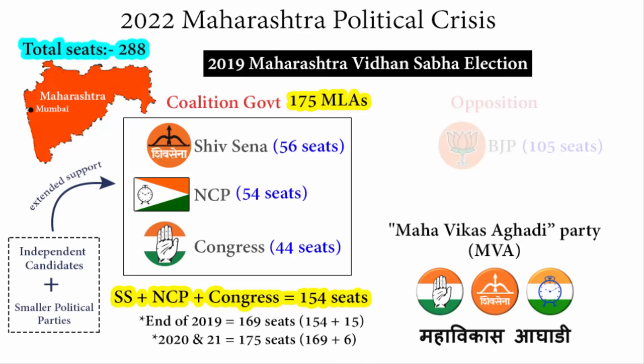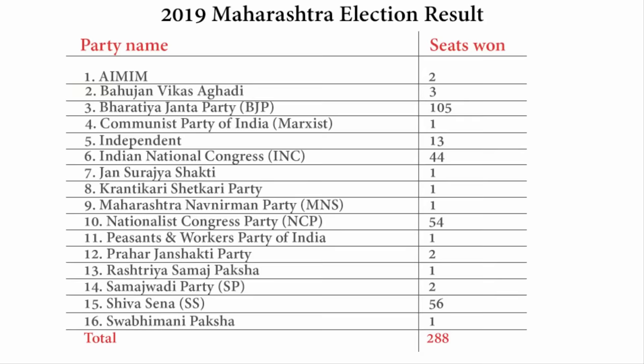The three main political parties together only had 154 seats, and 21 more MLAs joined them subsequently. These 21 MLAs came from AIMIM, Bahujan Vikas Aghari — part of the UPA coalition — the Communist Party of India (Marxist), the Peasants and Workers Party of India, Prahar Janashakti Party, Samajwadi Party, and finally independent candidates. All of them extended their support to the Mahavikas Aghari coalition.